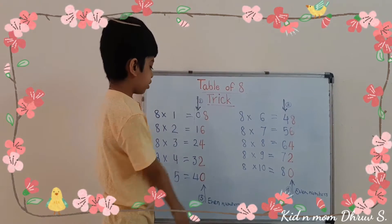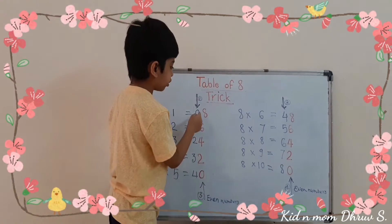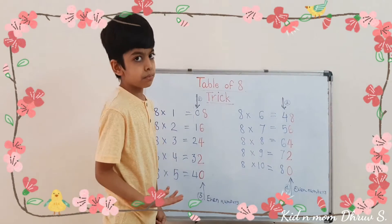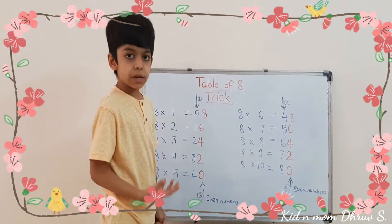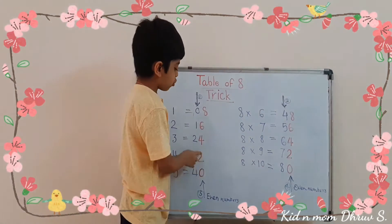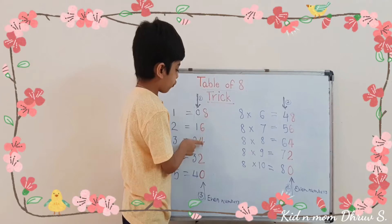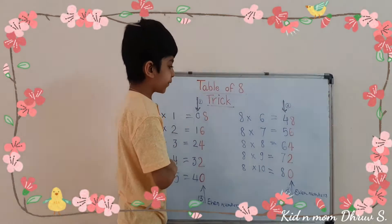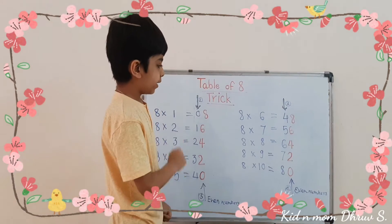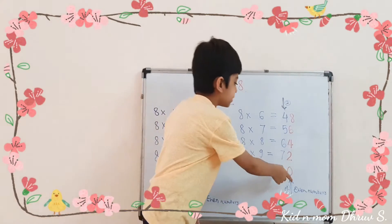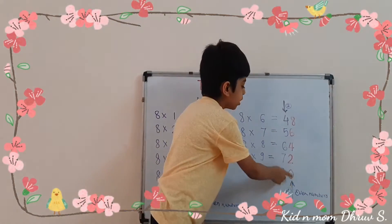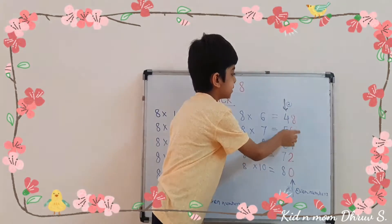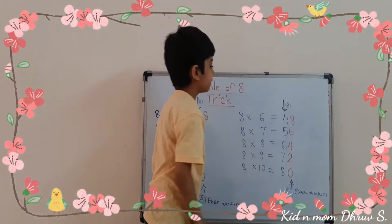And then, right here, you have to write the even numbers. The even numbers are 0, 2, 4, 6, 8. And the same again: 0, 2, 4, 6, 8.